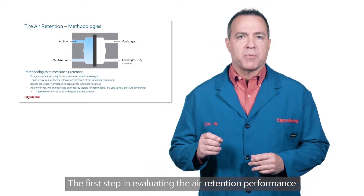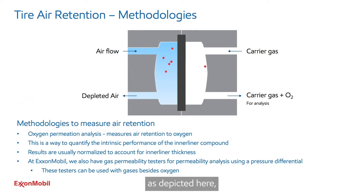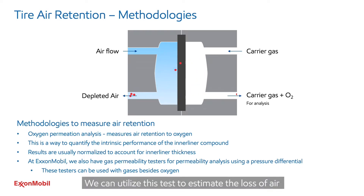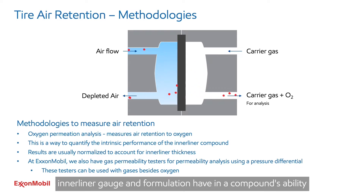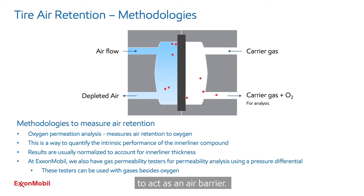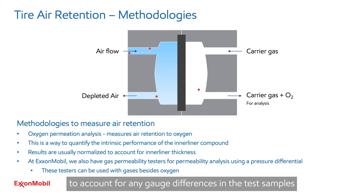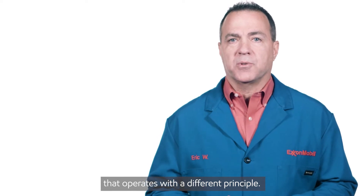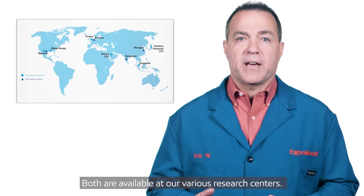The first step in evaluating the air retention performance is an air impermeability test of the inner liner compound. An oxygen permeation analyzer, as depicted here, measures the amount of oxygen that permeates through a membrane. We can utilize this test to estimate the loss of air going through a typical inner liner compound. Using this analysis, it is easy to see the impact inner liner gauge and formulation have in a compound's ability to act as an air barrier. Since gauge does play a key role in air retention, it is critical to normalize test results to account for any gauge differences in the test samples so we can evaluate only the compound's formulation. At ExxonMobil, we also have the availability of a gas permeability tester that operates with a different principle. It relies on pressure differential across the barrier and can provide similar results. Both are available at our various research centers.